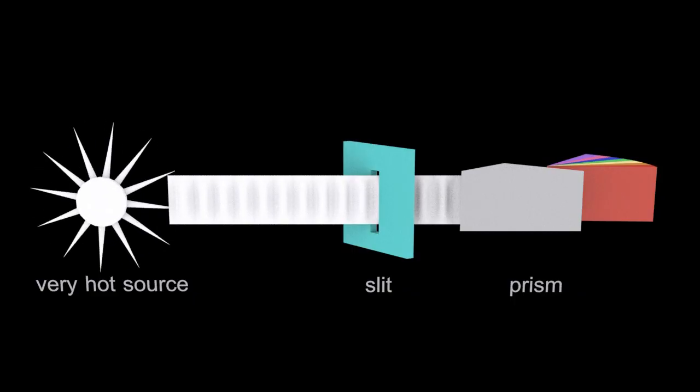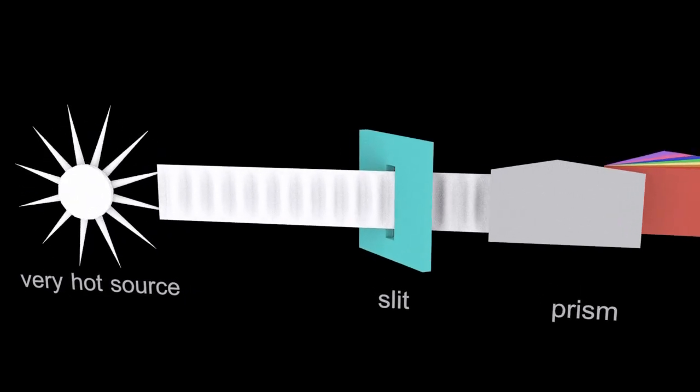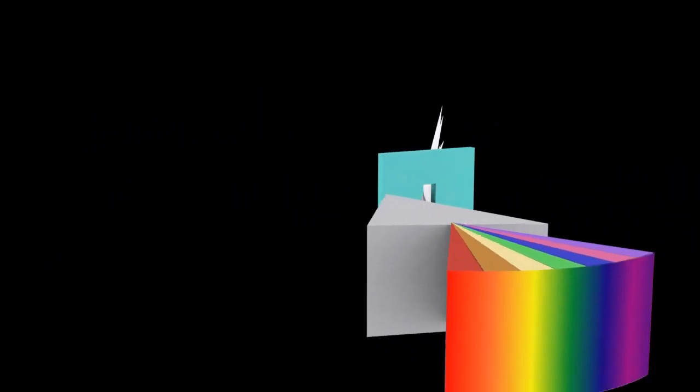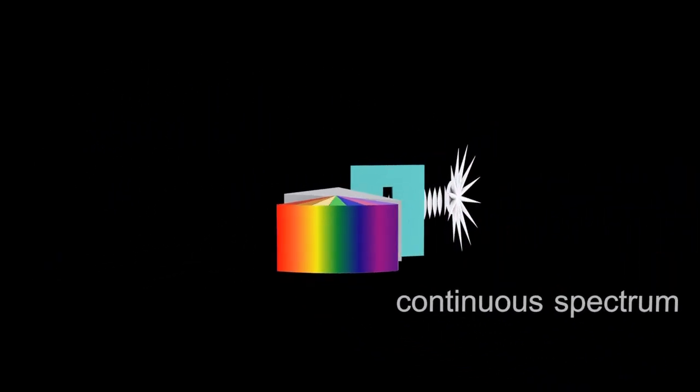If you have a very hot source of light giving out all wavelengths of light, then when that passes through the slit and the prism you'll get a continuous spectrum that shows all wavelengths of light.